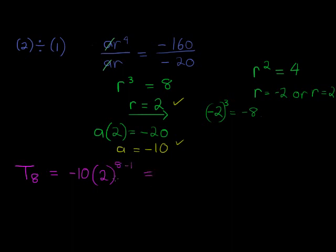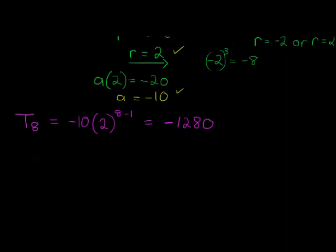Substitute everything into that general term. Now I find 8 minus 1 is 7, 2 to the power of 7 is 128, times negative 10 is negative 1280. I multiply with a 10, I can just add a 0 at the end. And there we go, that would be the 8th term: negative 1280.